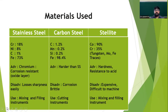Earlier, carbon steels were used for the fabrication of hand instruments, exclusively for cutting instruments. Carbon steel is made of carbon 1.2%, manganese 0.2%, silicon 0.2%, and iron 98.4%. The advantage is that it is harder, but the problems are that it is prone to corrosion and is brittle.